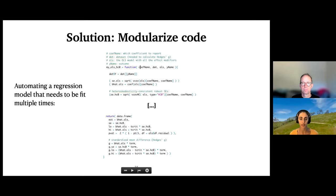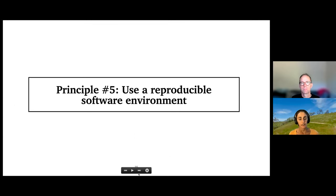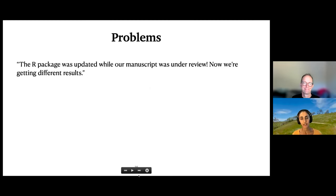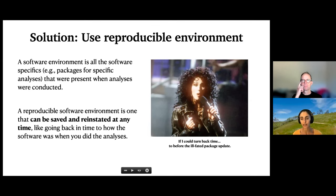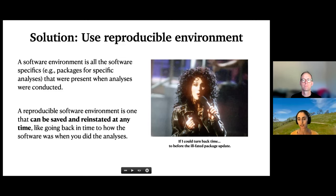The final principle is reproducible software environments. Common problems: an R package got updated while your manuscript was under review and now you're getting different results. A software environment is essentially all of the software specifics — such as packages for different analyses — that were present when you did your data analyses. A reproducible software environment is one that can be saved and reinstated at any time, like going back in time to how the software was when you did the analyses, even if that's no longer the most current version.